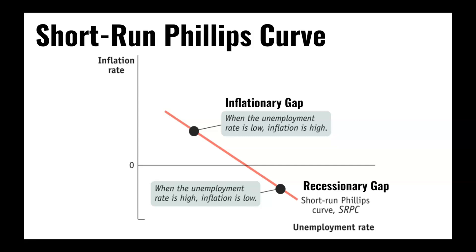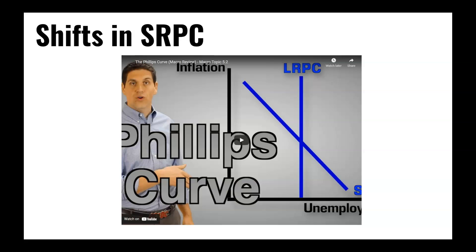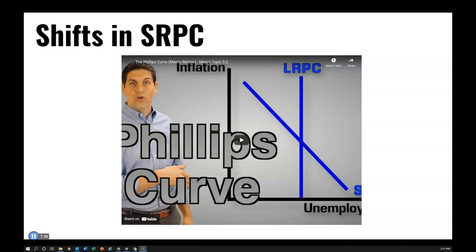The Phillips Curve can shift under certain circumstances, and Jacob Clifford has a really useful video on that, so I will link that video in the description for you to take a look at. When you watch his video, pay careful attention not only to why or under what circumstances the Phillips Curve will shift, but also his explanation for the existence of the long-run Phillips Curve, which is also pretty useful. We'll talk more about these concepts in class, give you a chance to work on some problems, and I will see you then.